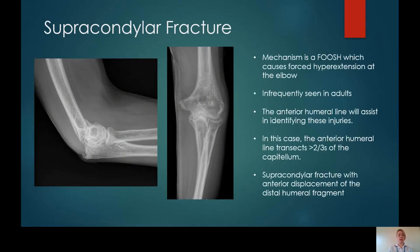This is an example of an adult supracondylar fracture. The mechanism is frequently a FOOSH injury, and although less commonly seen in adults, it is more likely seen within the elderly population as opposed to the young. When we use the anterior humeral line, you'll see that more than two thirds of the capitellum is being bisected — so this is an example of an anteriorly displaced supracondylar fracture. Note that the posterior fat pad is not actually present on this X-ray, although there is a fracture present.